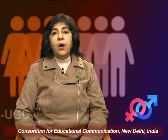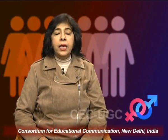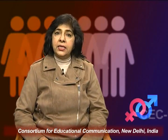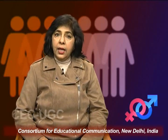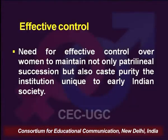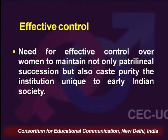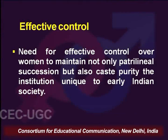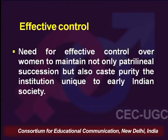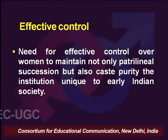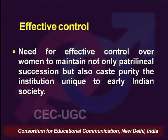A very important factor instrumental in the subordination of women in society was the issue of effective control. There was a need for effective control over women's bodies not only to maintain patrilineal succession but also to ensure greater and absolute caste purity, and caste as an institution was unique to early Indian society.